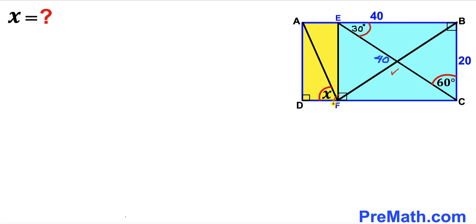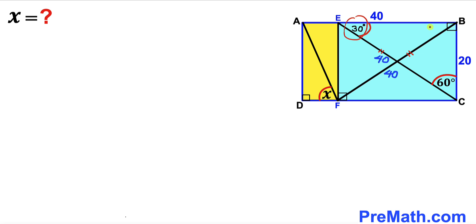In the next step, I connect points F and B to draw diagonal FB. Since we are dealing with rectangle EBCF, diagonal FB equals diagonal EC. Therefore, if EC is 40 units, then FB is also 40 units. Furthermore, the angle corresponding to the 30-degree angle in triangle EBC is congruent, so this new angle is also 30 degrees.